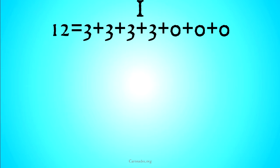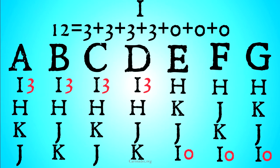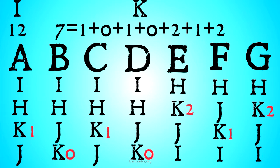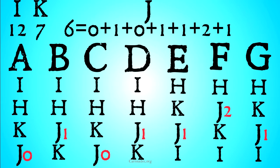Let's take a look at why. I is going to pick up a total of 12 points: four first-place votes giving it three points each, and three last-place votes giving it zero points each, for a total of 12. K is going to pick up seven: three third-place votes giving one point each, two second-place votes giving two points each, and two last-place votes giving zero points each.